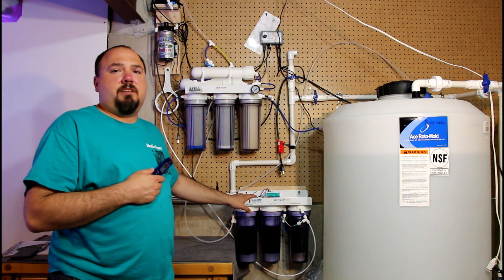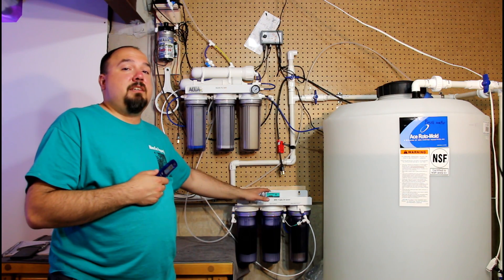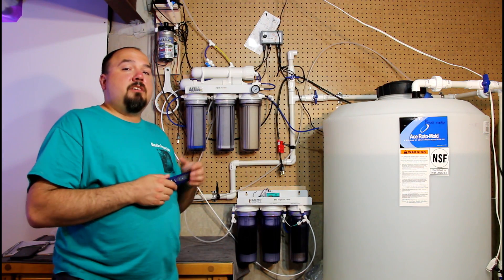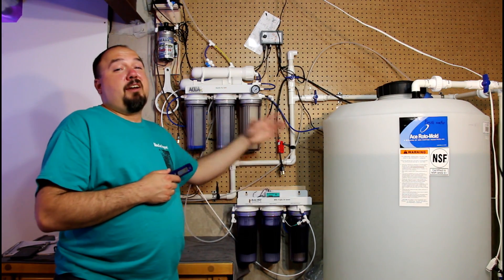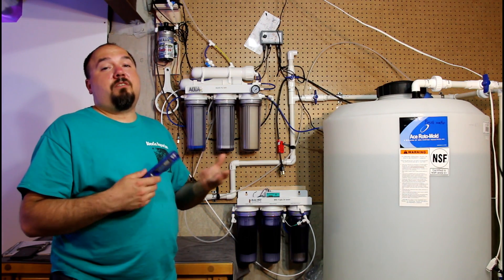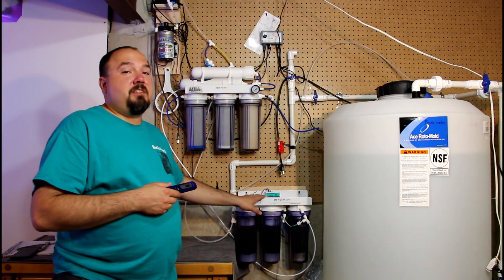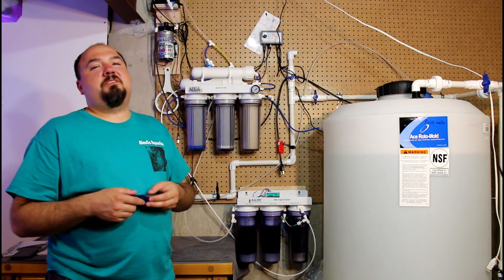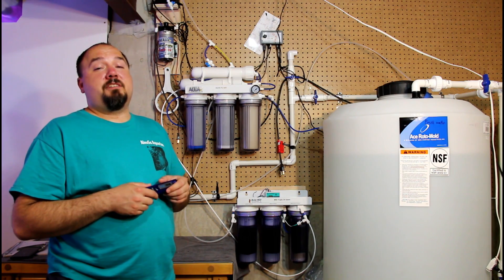Now this triple DI saver is a pretty simple unit. It consists of just an inline TDS meter with three points to measure TDS as it's incoming, in the middle, and then outgoing of this unit. This allows you to understand whether or not this DI resin is working. There's three different types of DI resin in here which I'm not going to get into but I'll link the video for BRS TV if you want to learn a whole lot about DI resin.